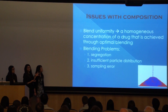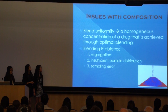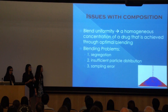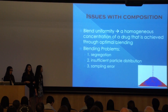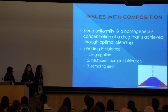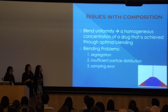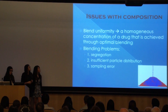To give a brief definition of blend uniformity, it is when a homogeneous concentration of a drug is achieved from optimal blending. You have two extremes that you want to avoid: having too much API and too little API. If you have too much of the active pharmaceutical ingredient, it can lead to toxic side effects and potential death due to having too much of that compound interacting in your body. Whereas if you have too little API, it can lead to the drug not performing the therapeutic function that the API is designed to.